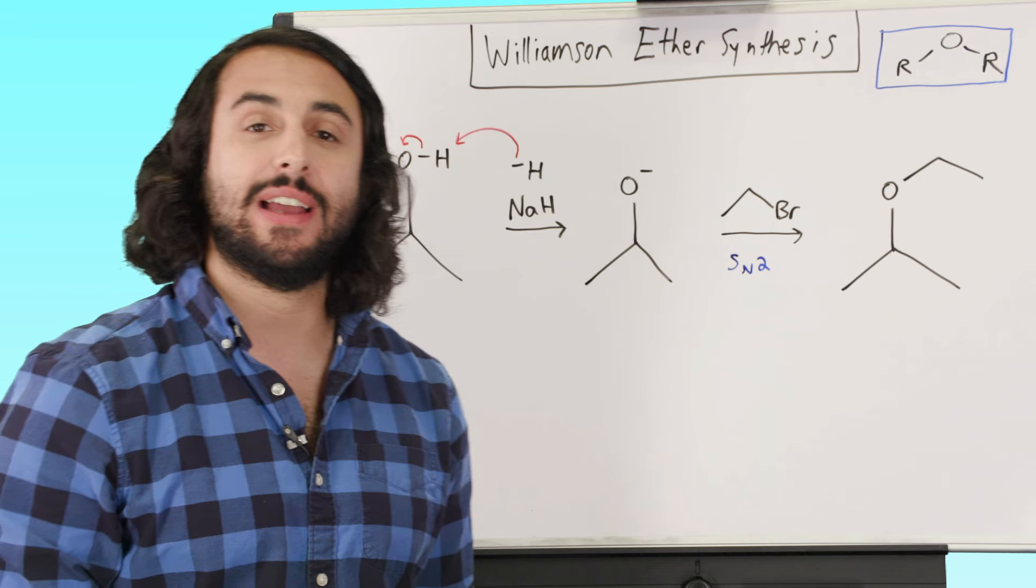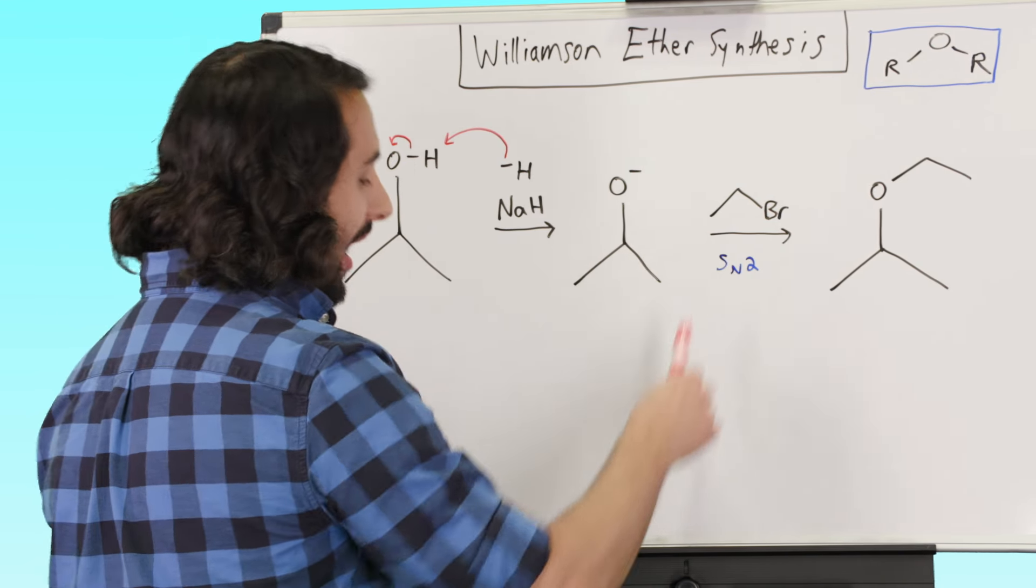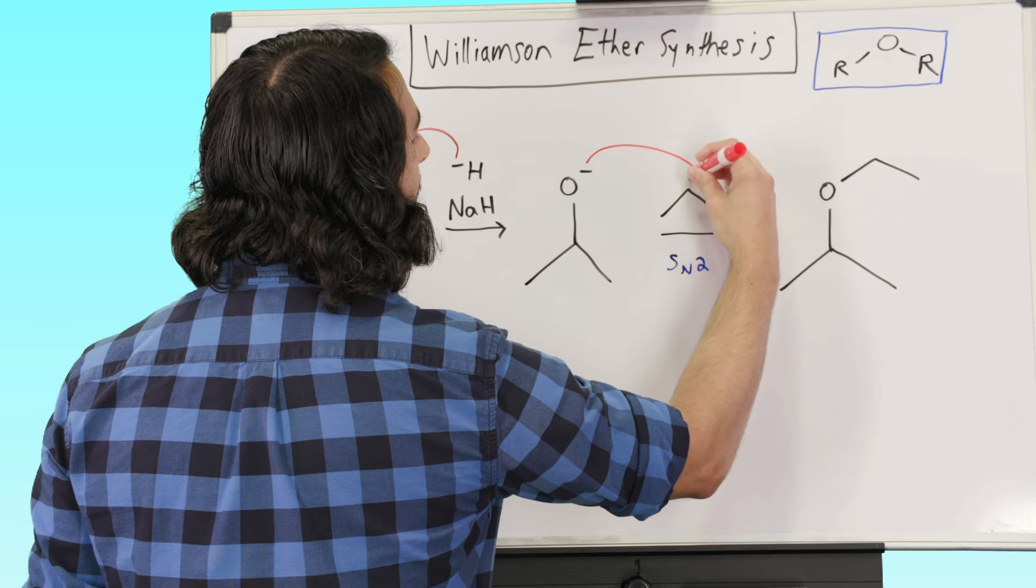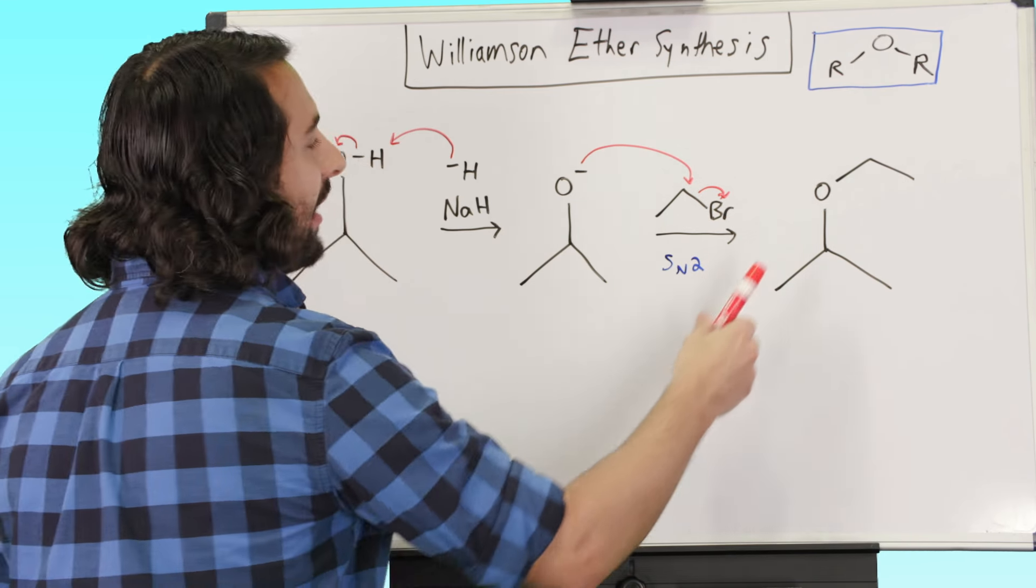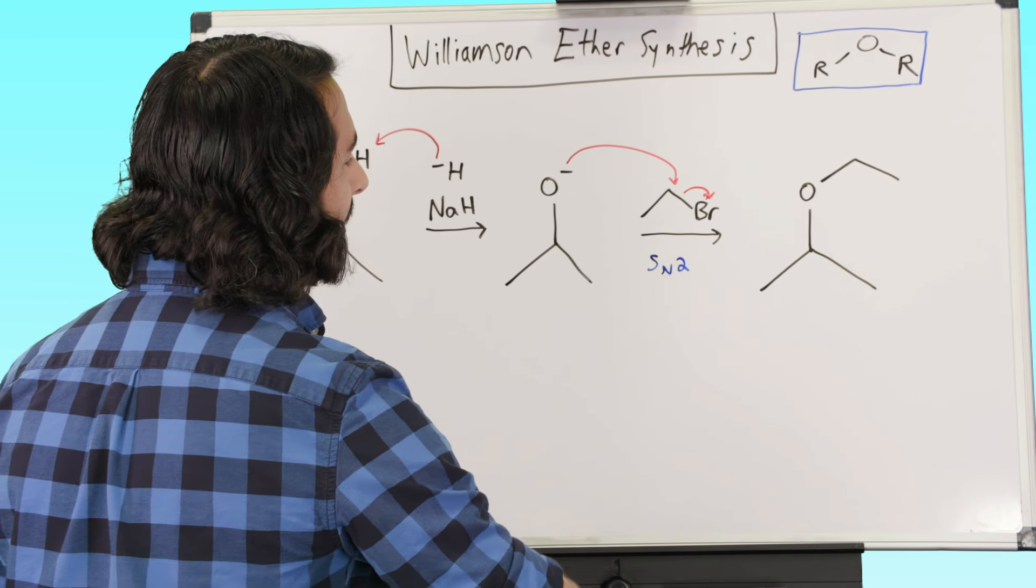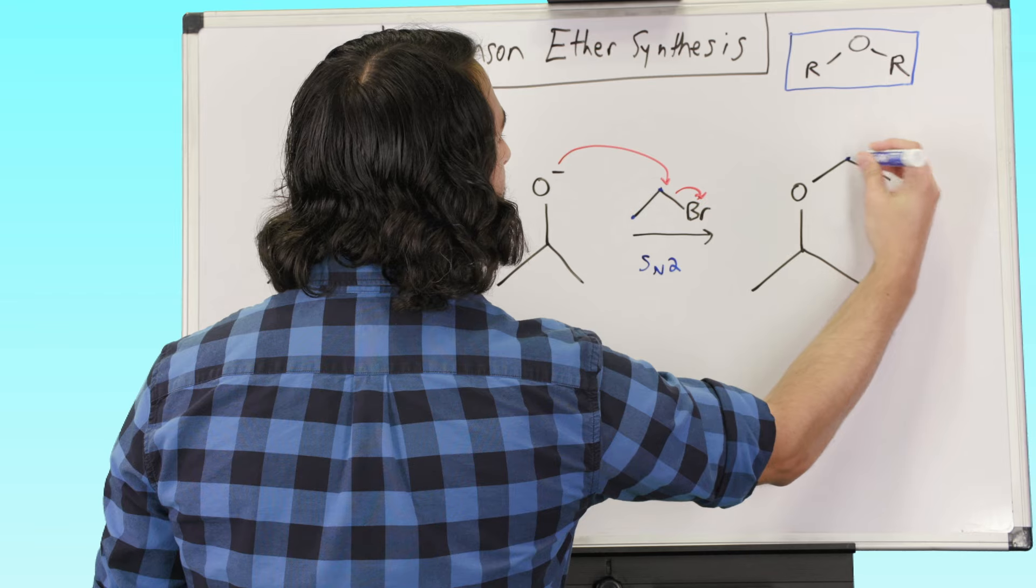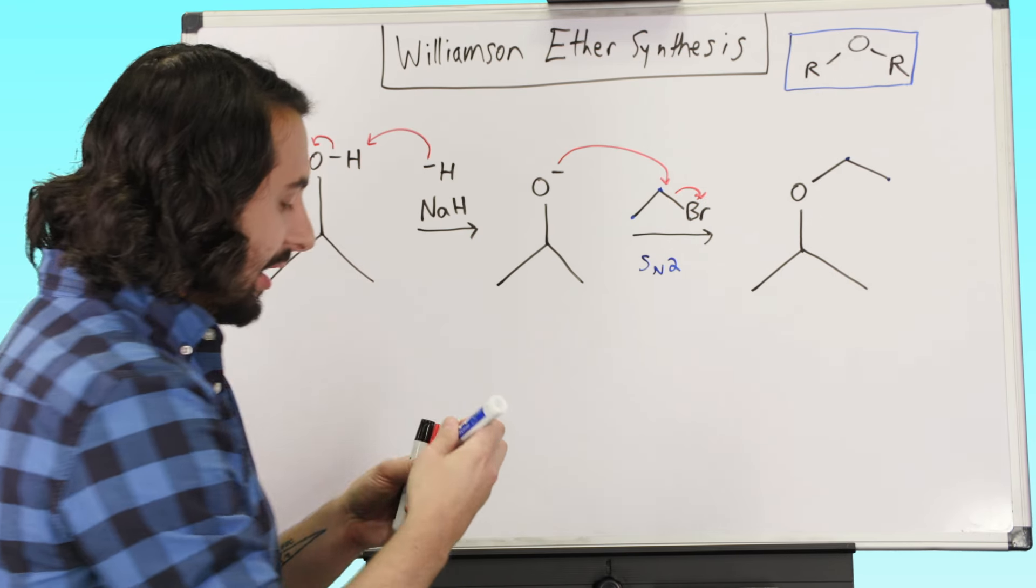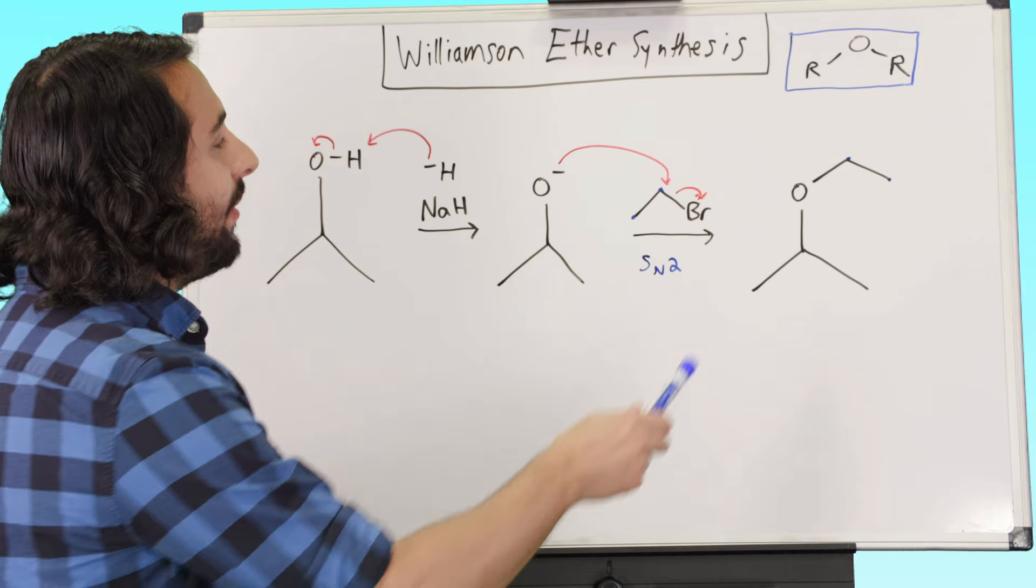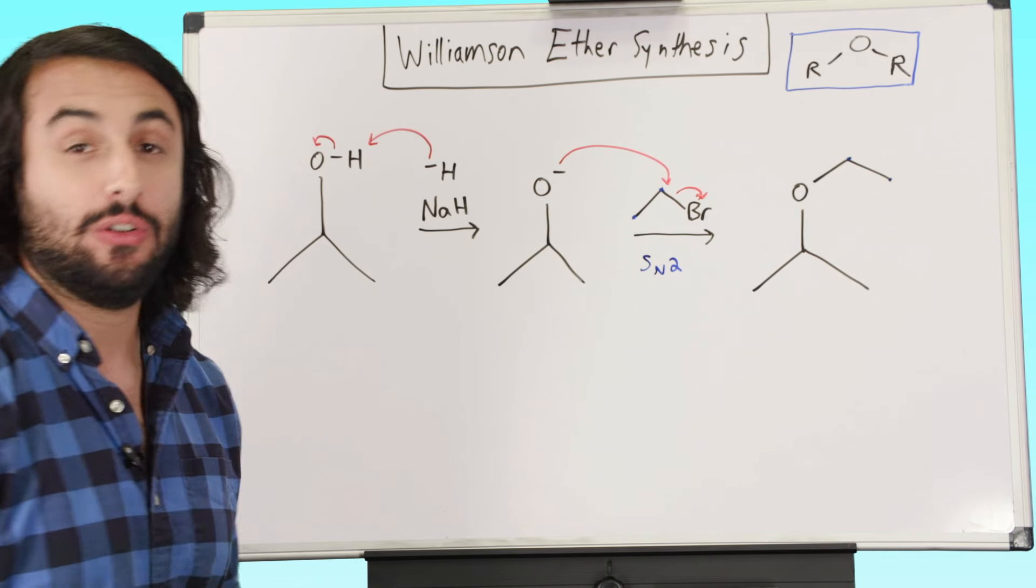Now an alkoxide, we know certainly can do SN2. And so why don't we just do SN2 on some alkyl halide. In this case, ethyl bromide. And we can kick that off. And here is that new bond that we formed. We have formed a bond. And we have tacked on these two carbons right here. So those two carbons got added on there. And now we have an ether because we have an ethyl isopropyl ether. We've got an oxygen bound to two alkyl groups.